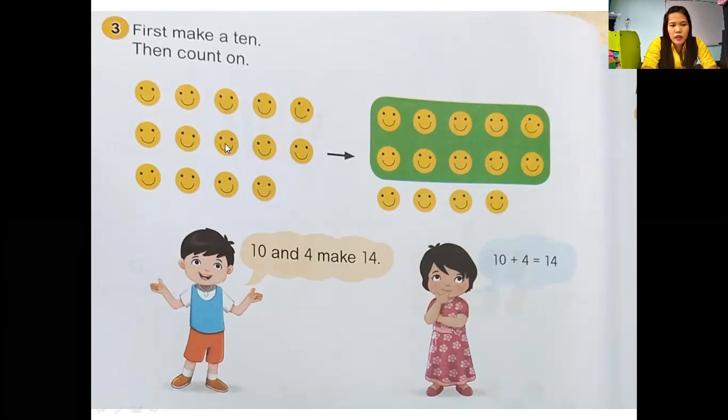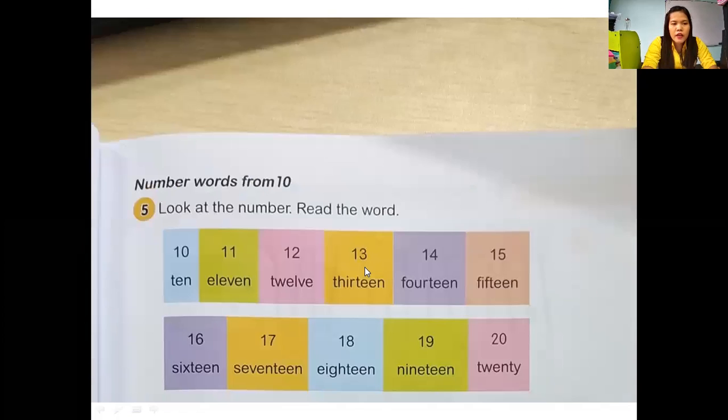Make 10 first, and then make four. So, 10 and four make 14. Jadi, ini bisa kalian lingkari untuk 10 dulu. Ingat setelah 10: 11, 12, 13, 14. So, 10 and four make 14. Understand, right? This is the example.